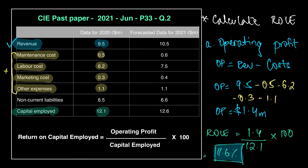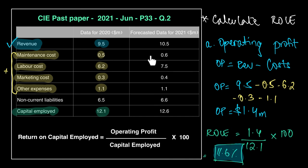I've now calculated ROCE for 2020. You can go ahead and pause at this point and try to solve it for 2021 — the process is exactly the same, the numbers will be different. In the end you compare both years and decide which year was better for the company: 2020 or 2021.